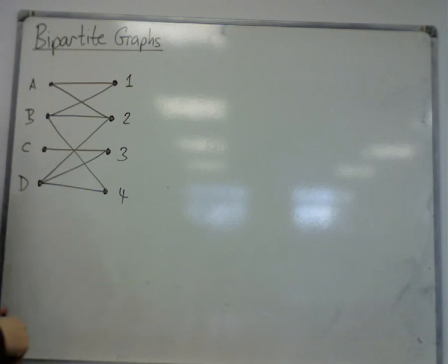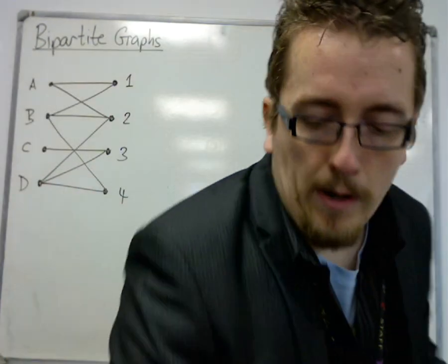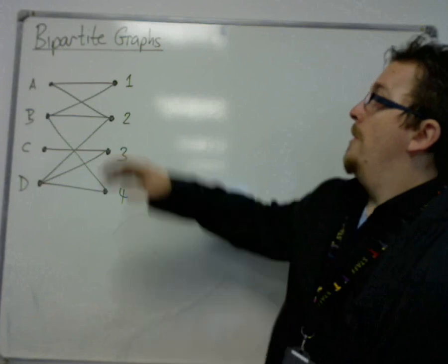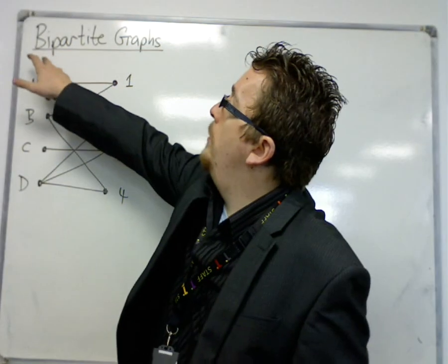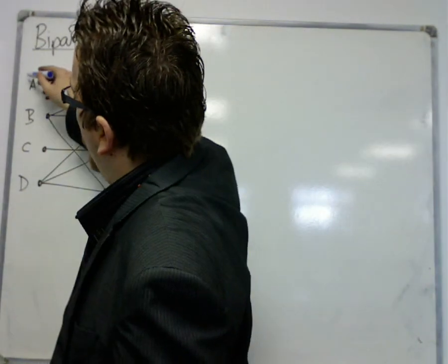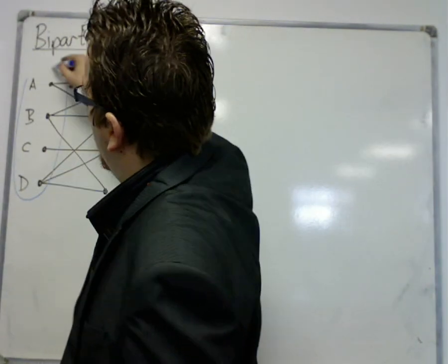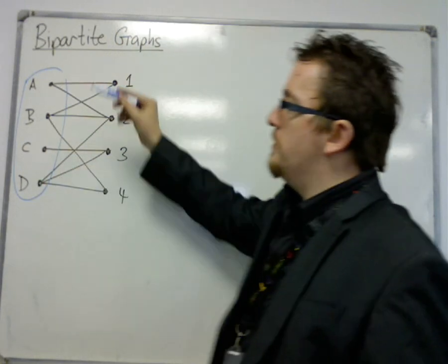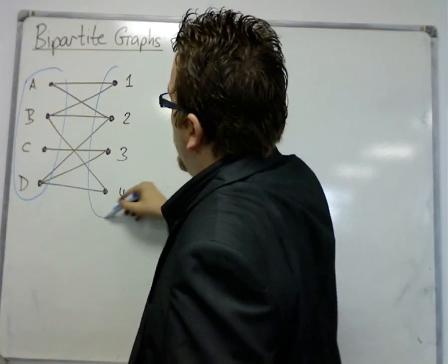So this is a bipartite graph. The word bi meaning two, and two parts. It's a graph that can be separated into a set of vertices on the left and a set of vertices on the right.